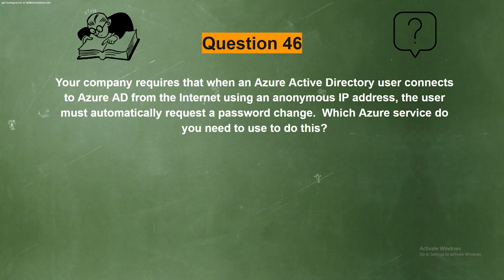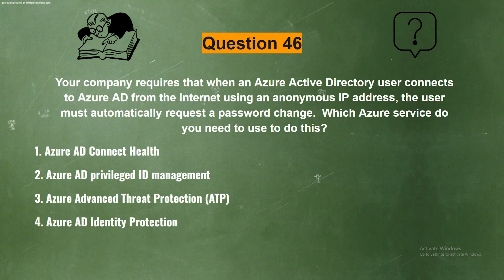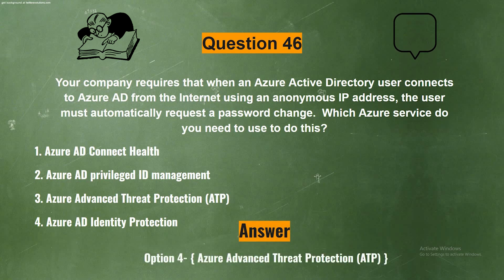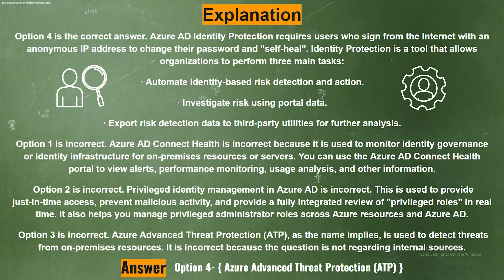Next question. Your company requires that when an Azure Active Directory user connects to Azure AD from the internet using an anonymous IP address, the user must automatically request a password change. Which Azure service do you need to use? The options are: Option 1: Azure AD Connect Health. Option 2: Azure AD Privileged Identity Management. Option 3: Azure Advanced Threat Protection. Option 4: Azure AD Identity Protection. The correct answer is Option 4: Azure AD Identity Protection. Azure AD Identity Protection requires users who sign in from the internet with an anonymous IP address to change their password and self-heal.